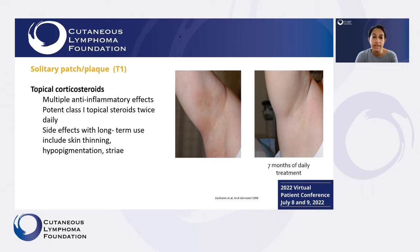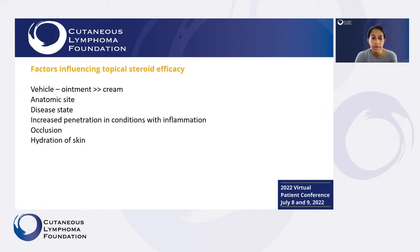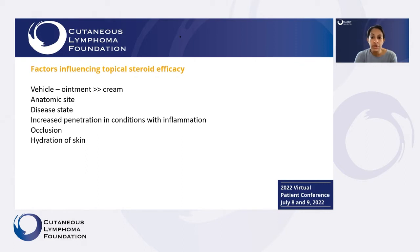Some side effects with long-term use of topical steroids include thinning of the skin, hypopigmentation, and striae. Factors influencing effectiveness include the vehicle used, the area of application — steroids work better where the skin is thinner and easier to penetrate — and they work better on thinner patches compared to plaques. They also penetrate better where areas of skin are very inflamed and when the skin is well hydrated.